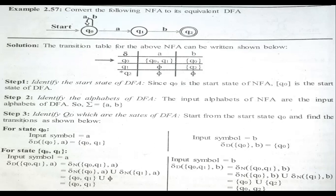From the diagram, the start state is Q0 and the final state is Q2. Alphabets are a and b. Filling the transition table: Q0 on a gives {Q0, Q1}; Q0 on b gives Q0; Q1 on a gives null; Q1 on b gives Q2; Q2 has no transitions — both null.